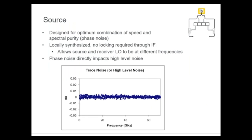The source is also very important because it determines high-level noise, which is related directly to the phase noise of the source. We want a fairly clean source. A lot of the phase noise gets canceled when doing ratio measurements, but we need locally synthesized sources — both the source and the LO that drives the receiver for down conversion need to be independently synthesized. Phase noise translating to high-level noise is a key point, especially as you go higher in frequency to millimeter waves.